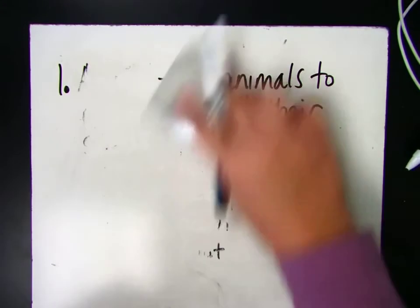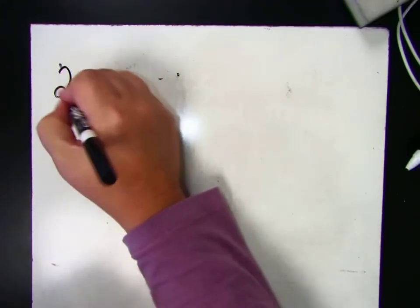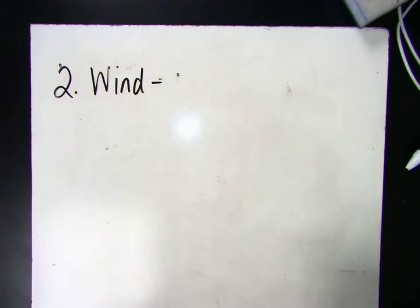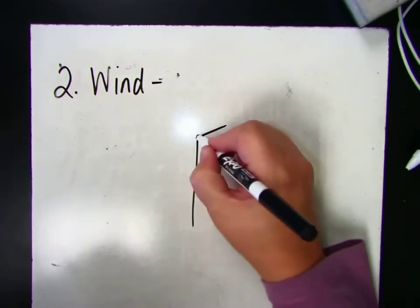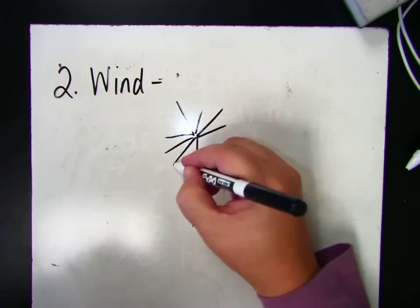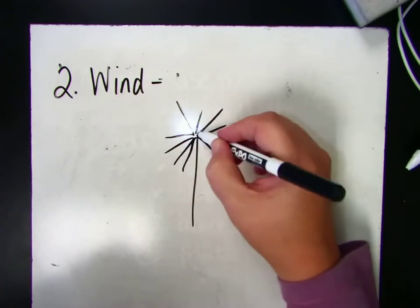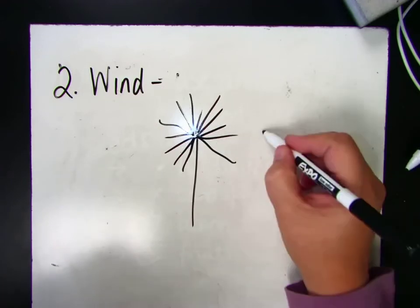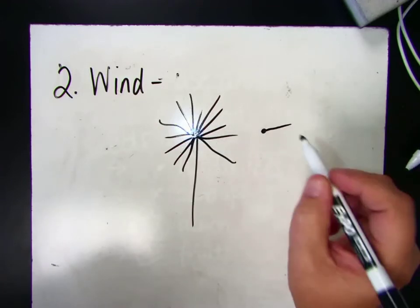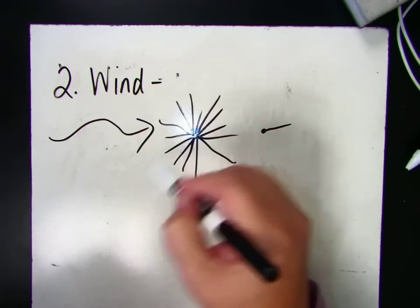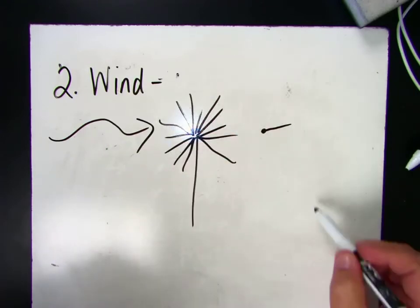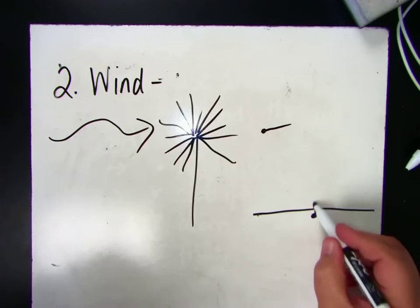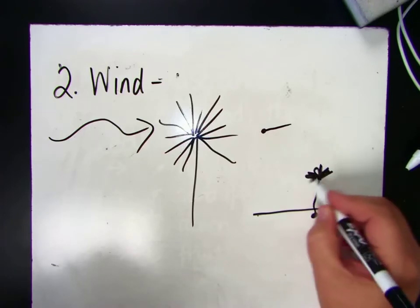Another way to disperse seeds is by wind. Wind is another way that plants use to disperse seeds. If anybody has ever blown on a nice fluffy dandelion where you make a wish, you're actually dispersing the seeds. Each of those little fluffy things on a dandelion is a seed with a little parachute. The wind comes along and blows it, and then the seed blows away,